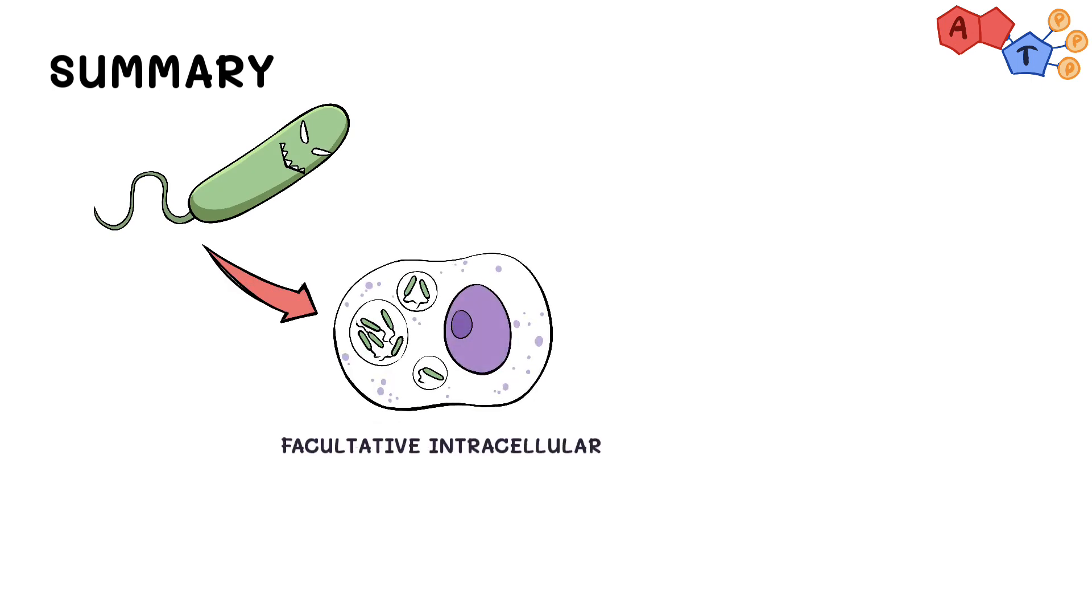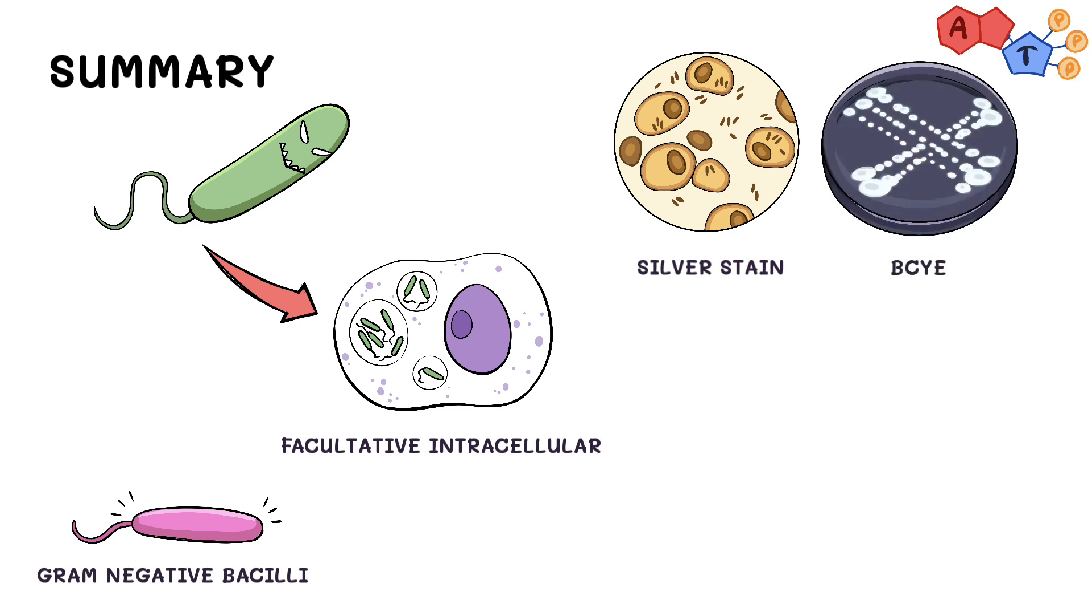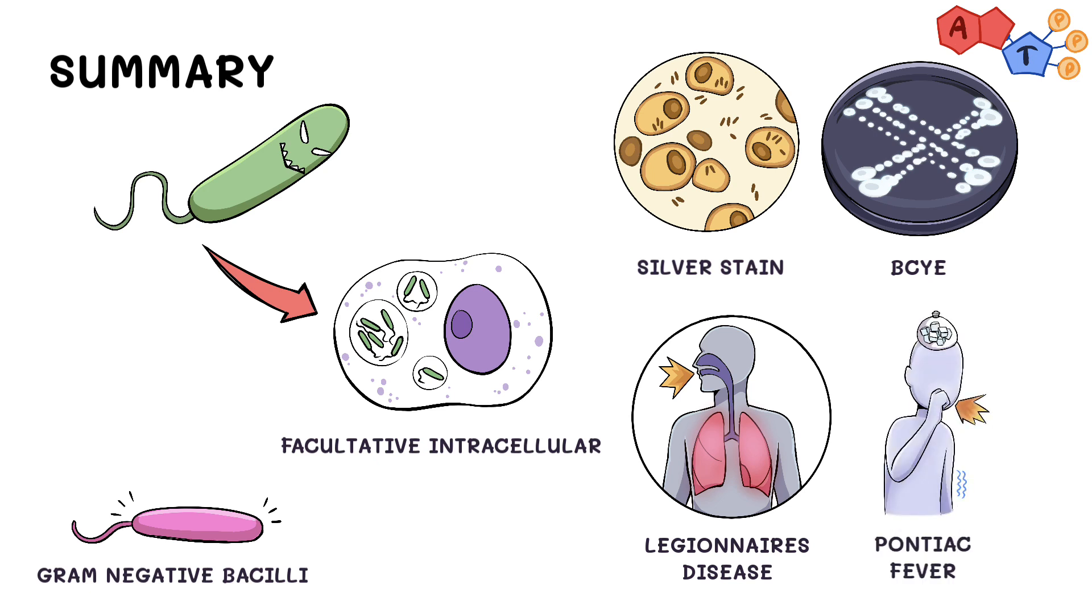Alright, to summarize. Legionella is a facultative intracellular rod which can also be considered a weak gram-negative organism. Since it doesn't gram stain well, we can use silver stain instead to identify it. It can be cultured on BCYE agar. It causes Legionnaires disease and Pontiac fever. And for the treatment, we either use a macrolide or a fluoroquinolone. And that's it for Legionella.